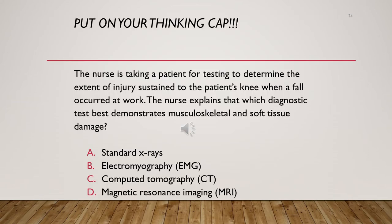Case study: A nurse is taking a patient for testing to determine the extent of injury to the knee after a fall at work. Which diagnostic test best demonstrates musculoskeletal and soft tissue damage? The correct answer is D — MRI. MRI is most useful for determining soft tissue damage, whereas standard x-rays and CT scans mainly reveal the fracture itself, and EMG evaluates muscle problems.